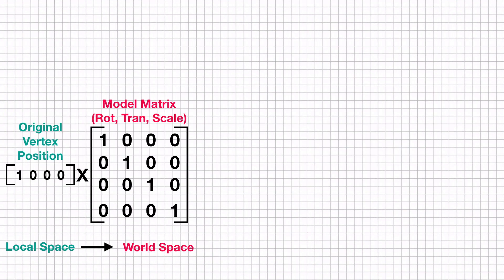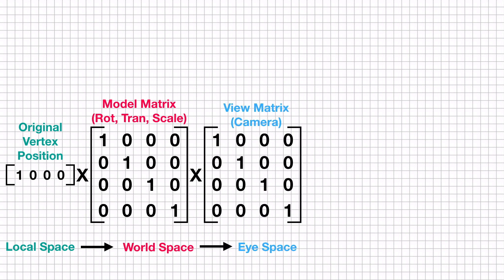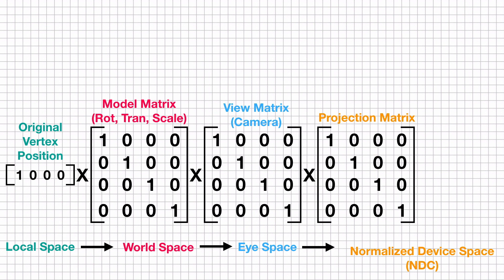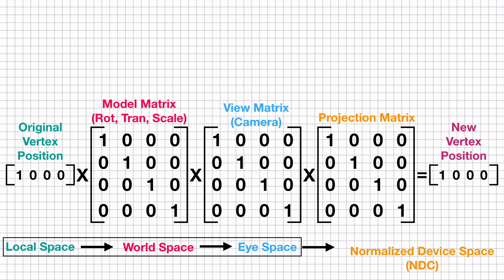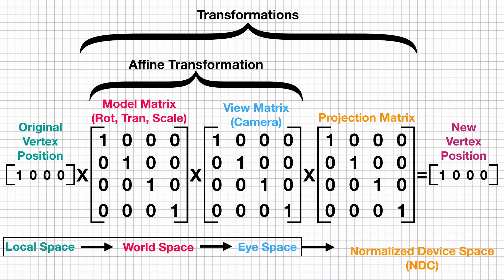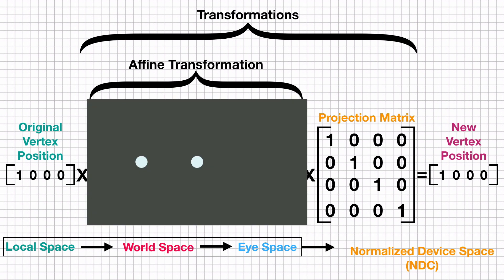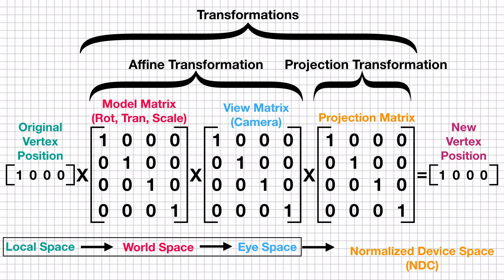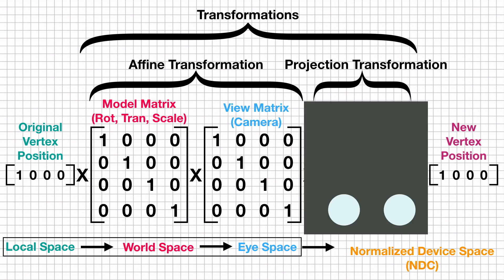We took our original vertex position, which was in local space, and we multiplied that by our model matrix, which put it into world space. We took that world space matrix and multiplied it by the view matrix and put it into eye space — so like with our camera. We have these three things going on right now. What we're going to do is apply something called a projection matrix. The projection matrix will then put it into normalized device space coordinates. The model matrix and the view matrix are affine transformations, meaning that if you multiply two vertices by the same model and view matrix, they move at the exact same distance from each other.